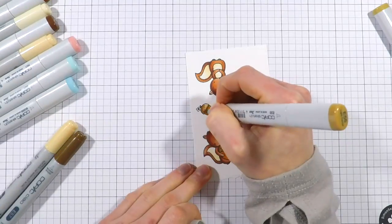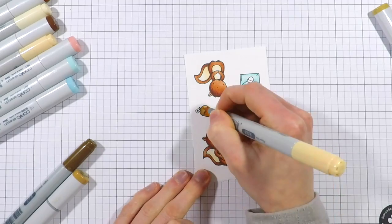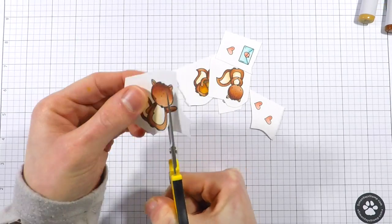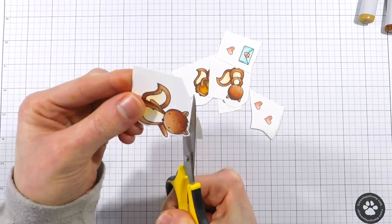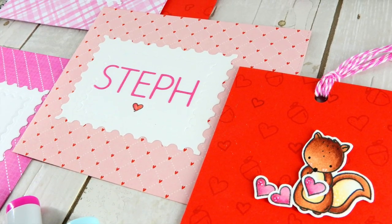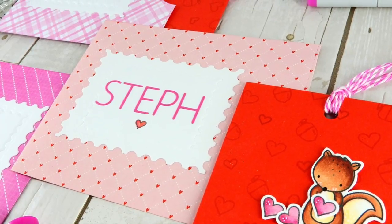Once I colored my images, I'm going to fussy cut them out with some fine tip scissors, but there are coordinating dies for this stamp set so you can use those if you have them. After I created my little critters, it's time to work on building the envelopes that the cards will go into.